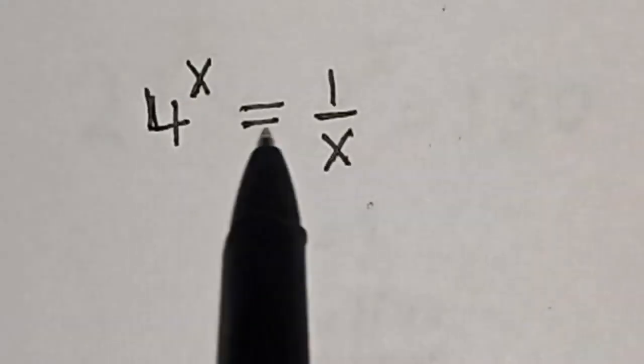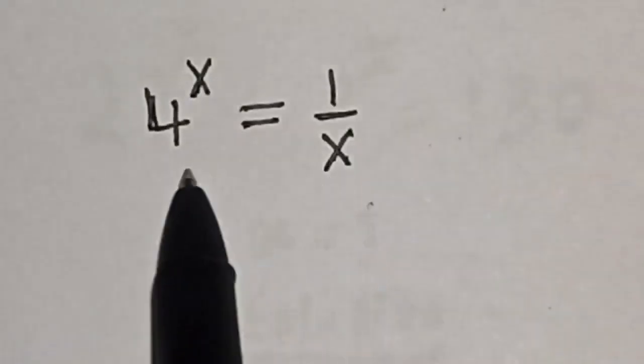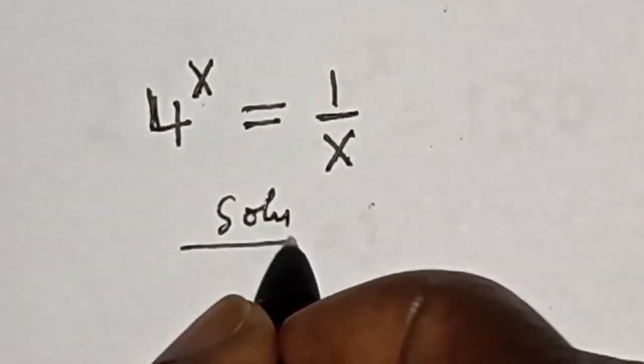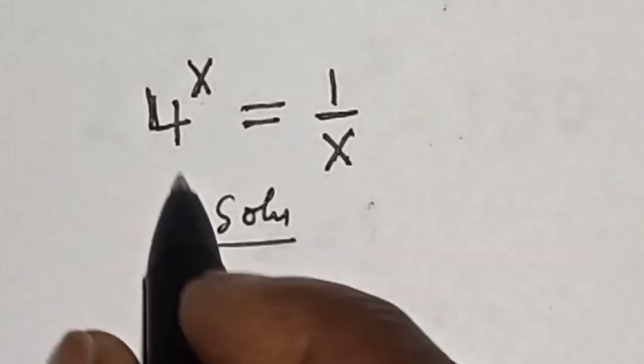4 to the power of x is equal to 1 over x. What is the value of x? Solution here.